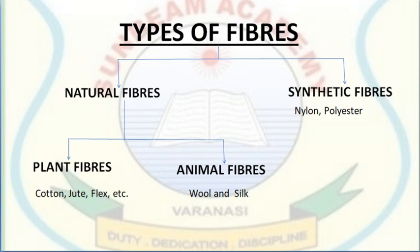Natural fibers are of two types based on their sources. The first is plant fiber, obtained from plants like cotton, jute, flax and hemp. Cotton is the most widely used of all textile fibers. The base of plant fiber is cellulose, which is the structural material used by nature in the plant world.